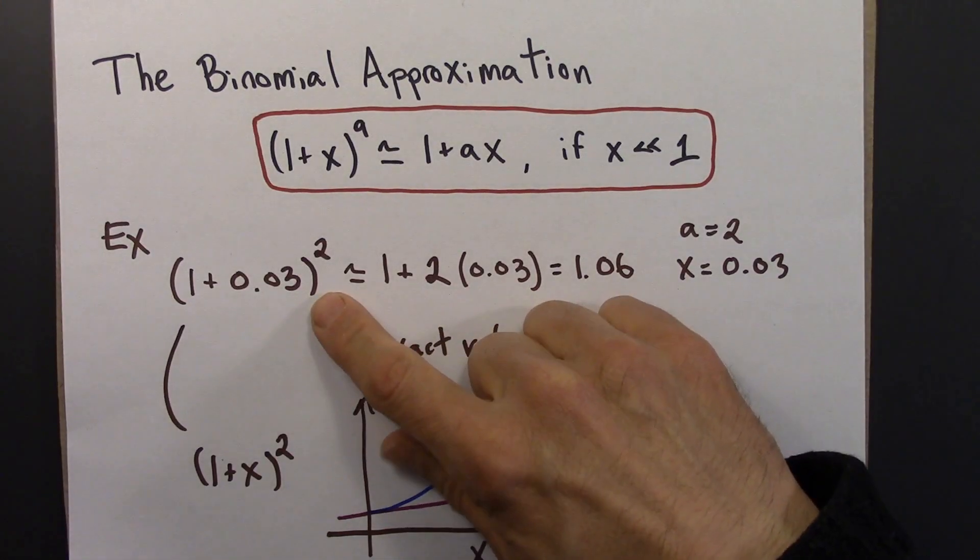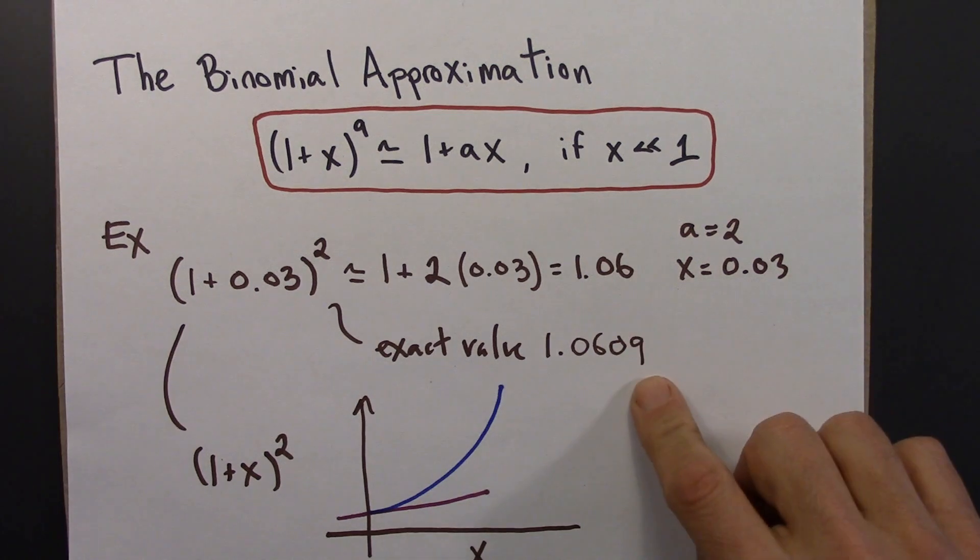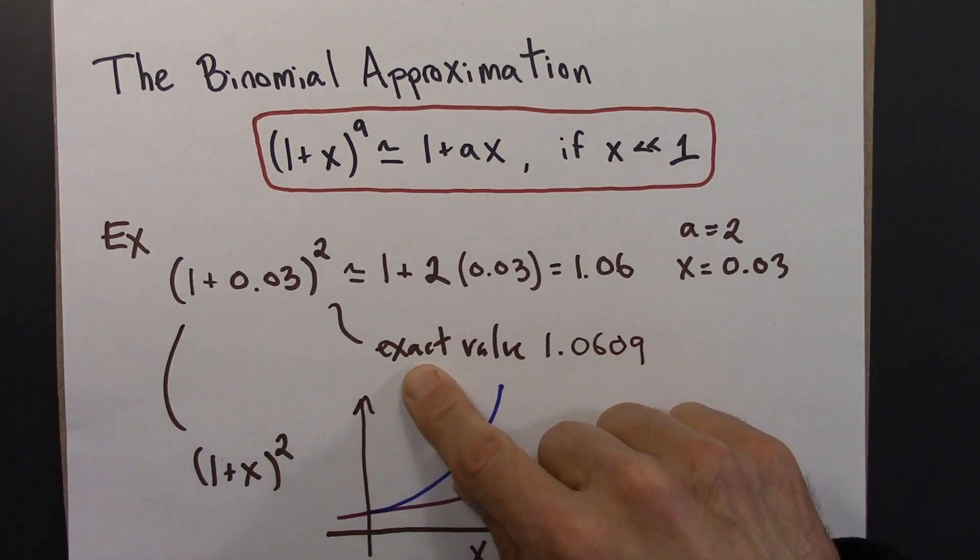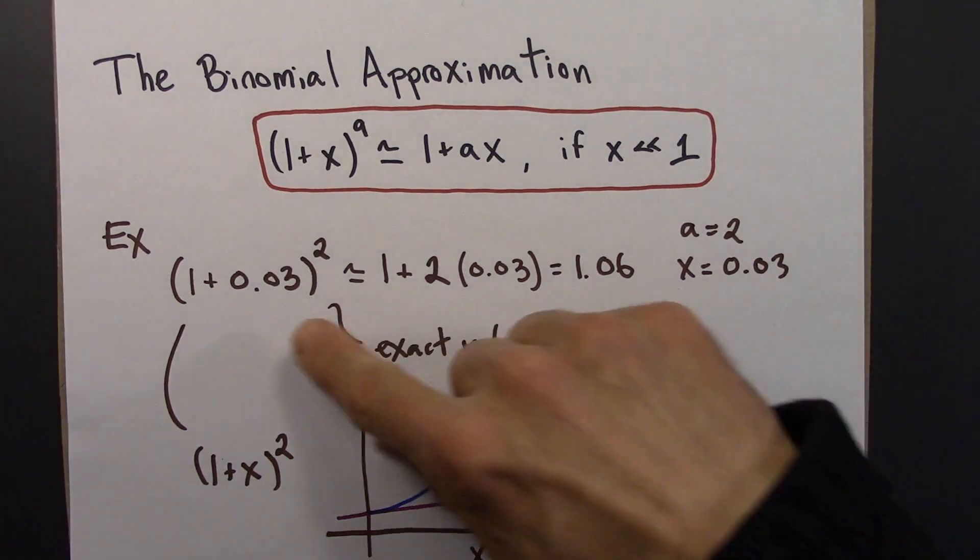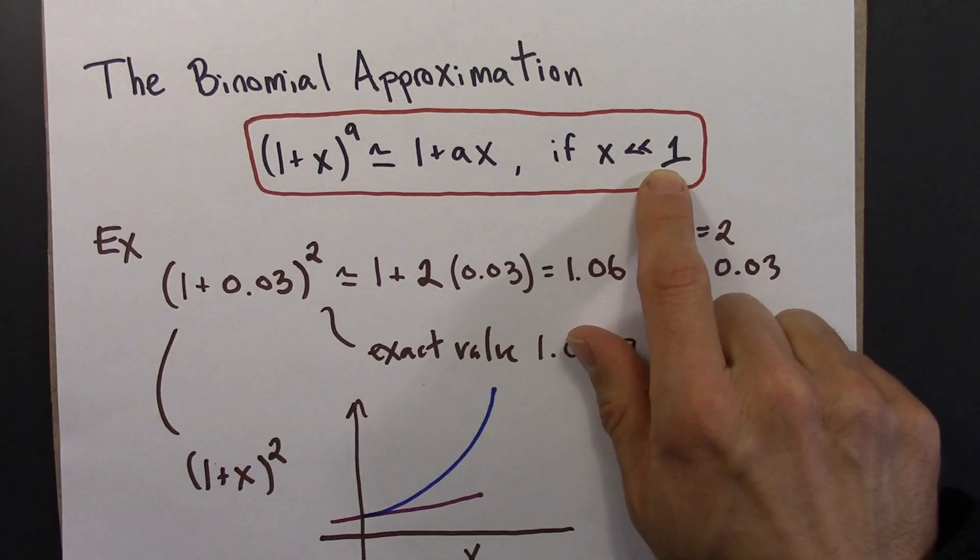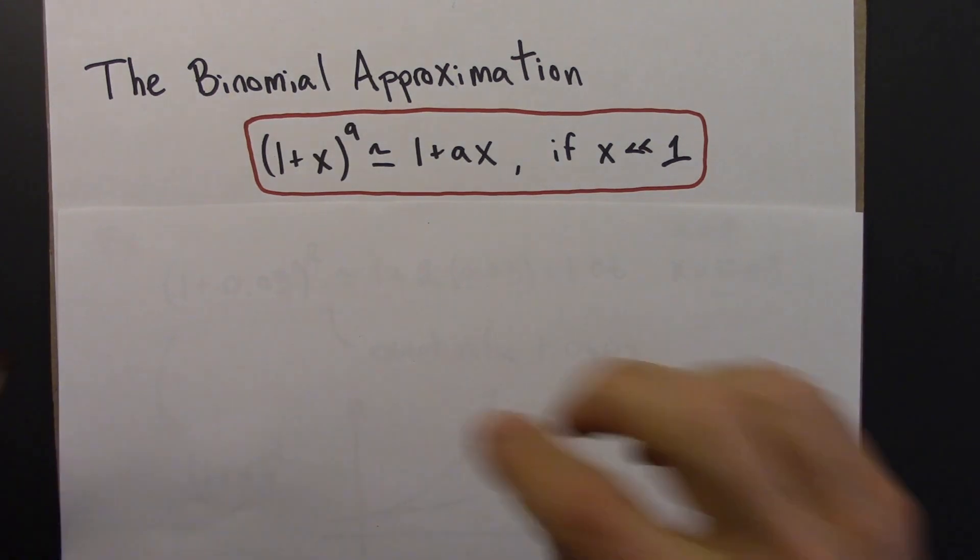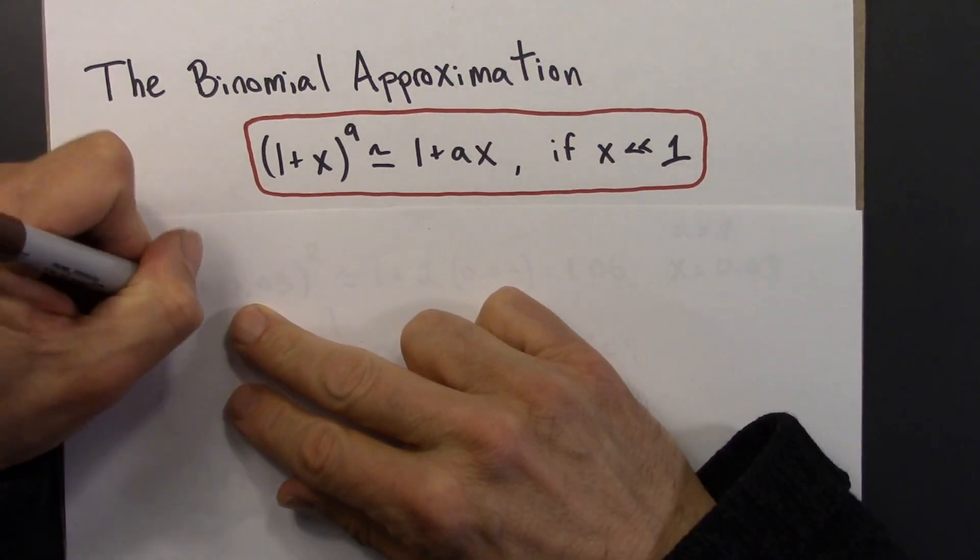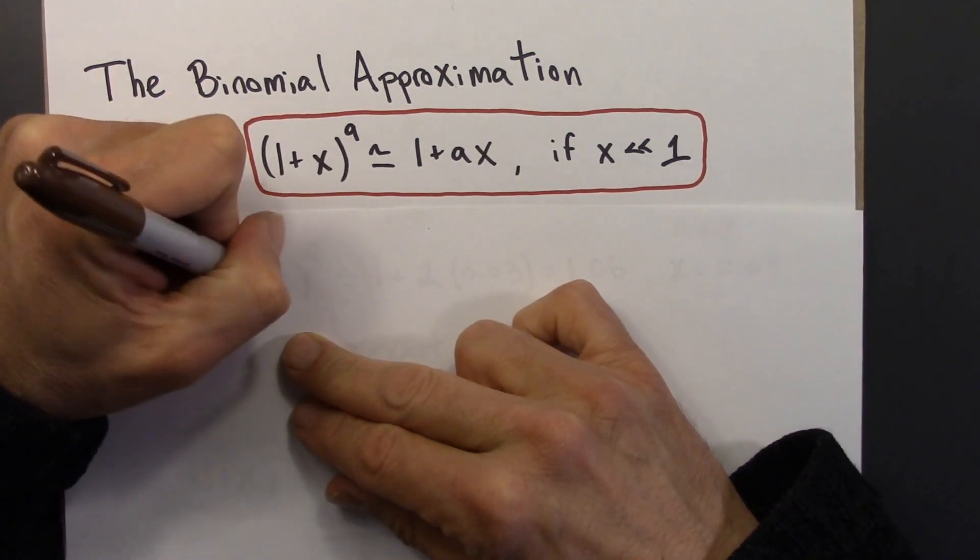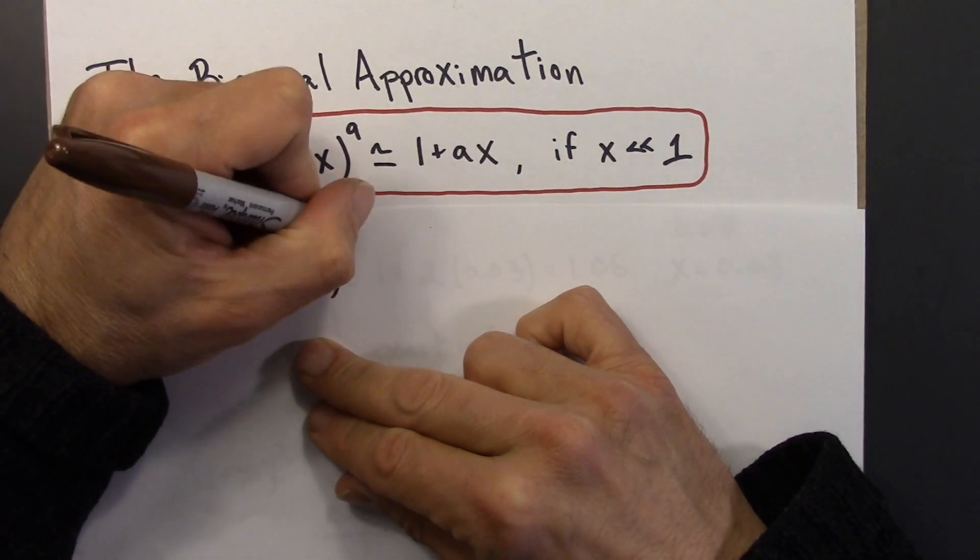So let me do one more numerical example to convince you of the utility of the binomial approximation. Because maybe you weren't impressed by this. Maybe you said, oh yeah, but these are a little bit different and it's not hard to enter this on a calculator. Anyway, so what's the big deal? So let's imagine that x, instead of being 0.03, which is smaller than 1, let's do something that's really, really small. So I'll do that here. So let's say that we have (1 + 3×10⁻⁶)².